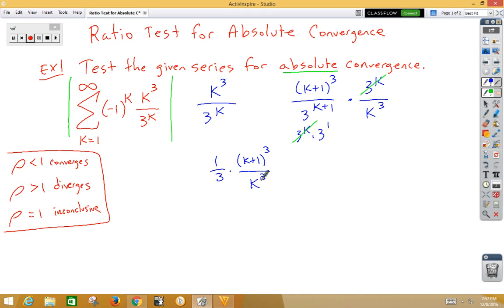I wrote it that way for a particular reason. If we now take the limit as k approaches infinity, notice since those are both k cubed, we can think of it as 1 third k plus 1 over k cubed. That's going to allow us to think of it as 1 third of 1 plus 1 over k cubed.